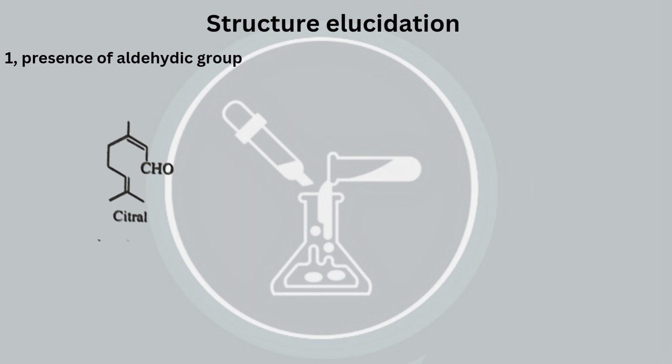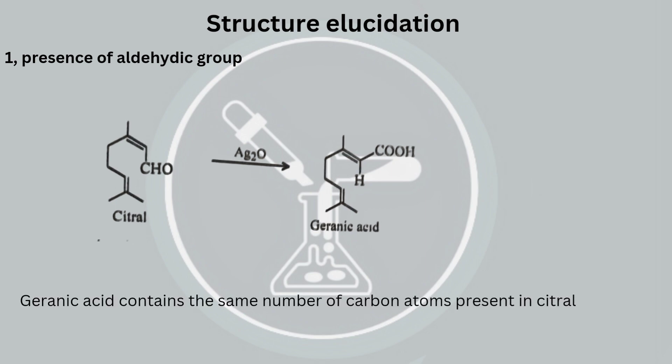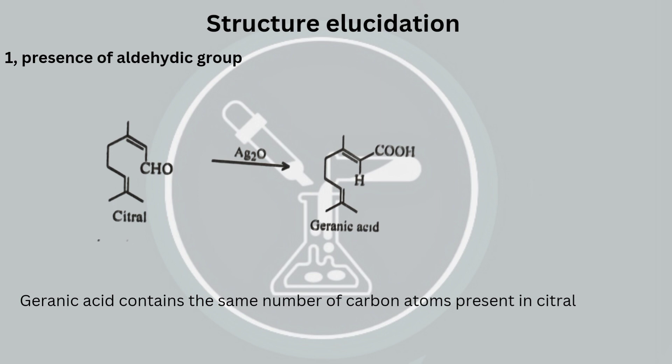Structural Elucidation. Citral forms an oxime with hydroxylamine and on mild oxidation with silver oxide, it forms geranic acid. Here we can see that geranic acid has the same number of atoms as citral. So there is an aldehyde group present in citral.